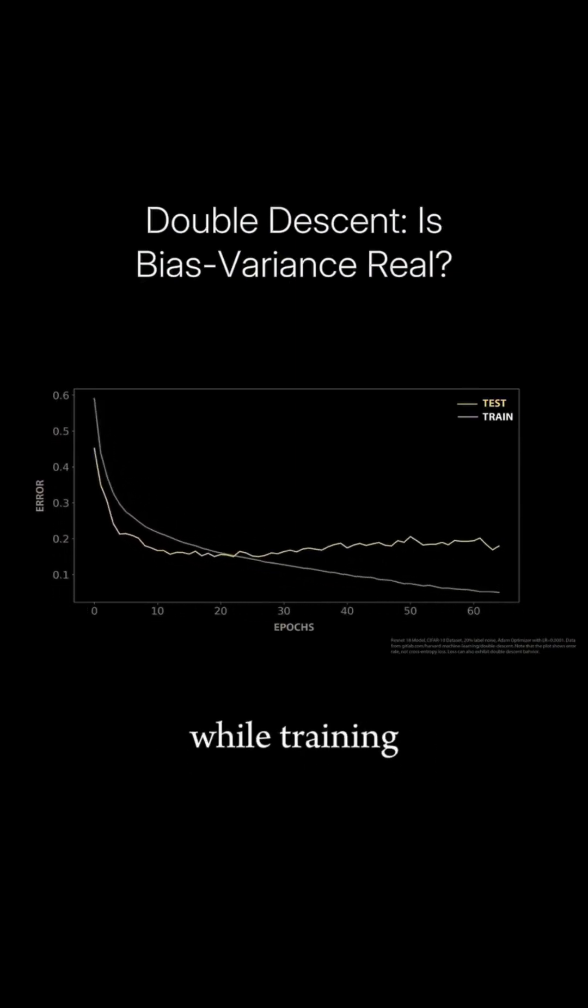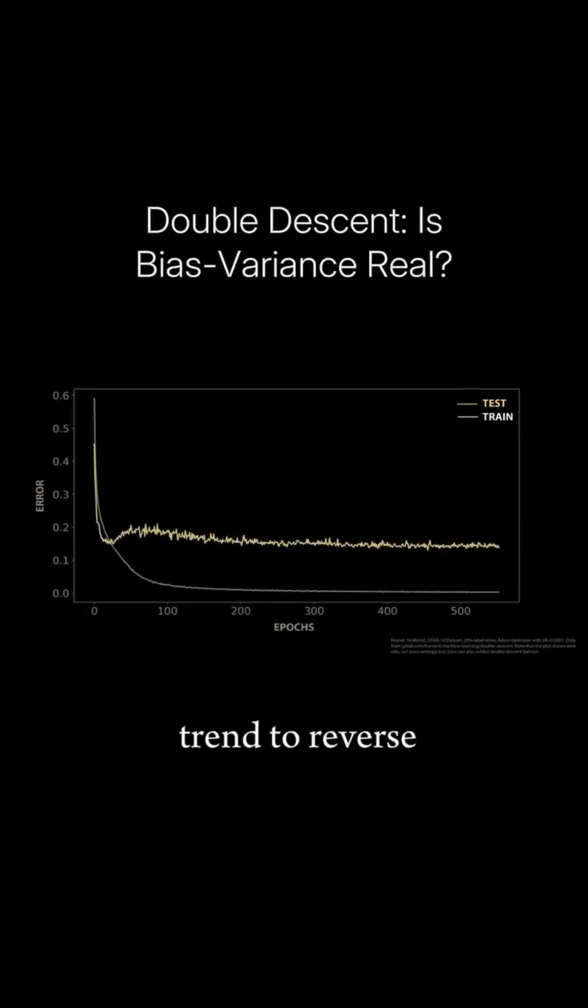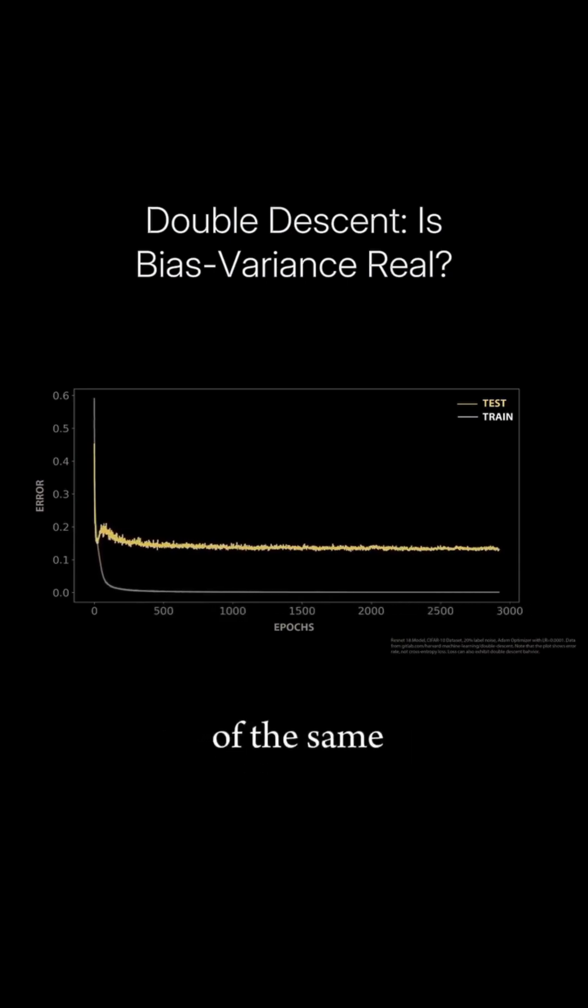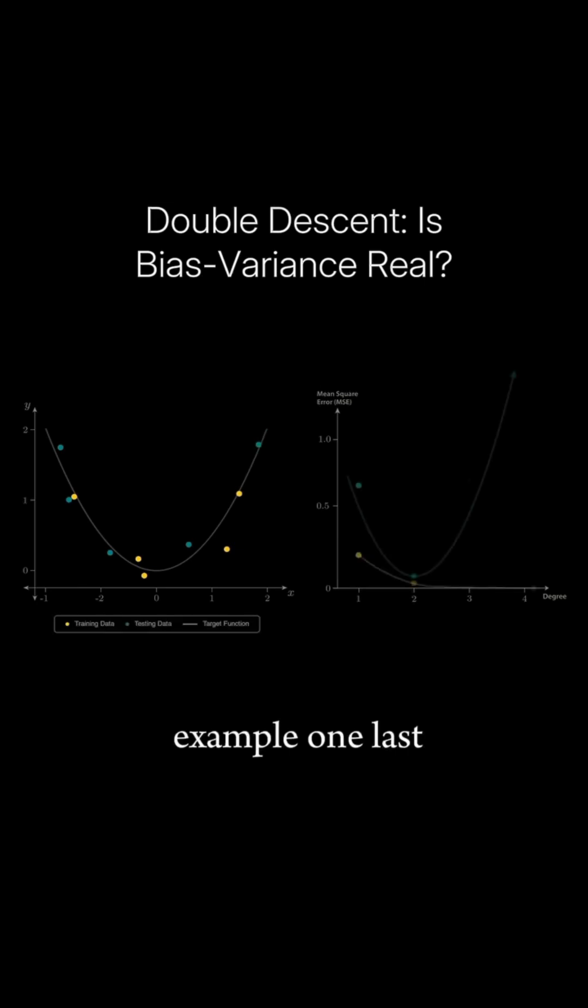Why would models start overfitting while training, only for the trend to reverse after undergoing more of the same training process? Let's return to our curve fitting example one last time.